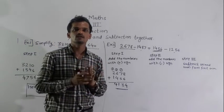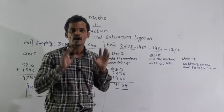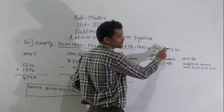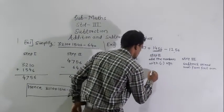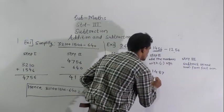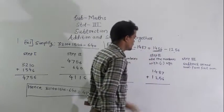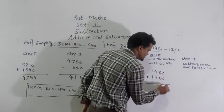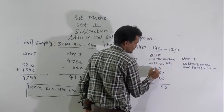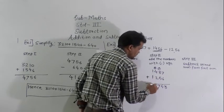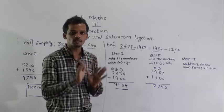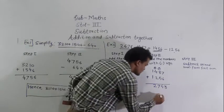Next step: add the 2 numbers which have a minus sign. Before 1,487 there is a minus sign, and before 1,256 there is a minus sign. So add those 2 numbers: 1,487 plus 1,256. 7 plus 6 is 13, write 3, carry 1. 8 plus 5 is 13, plus 1 is 14, write 4, carry 1. 4 plus 2 is 6, plus 1 is 7. 1 plus 1 is 2. So 2,743 is the second sum.